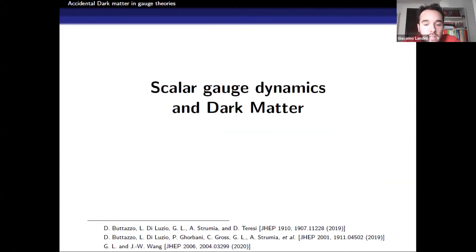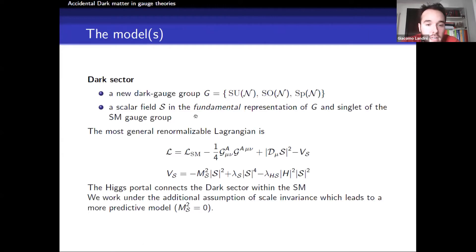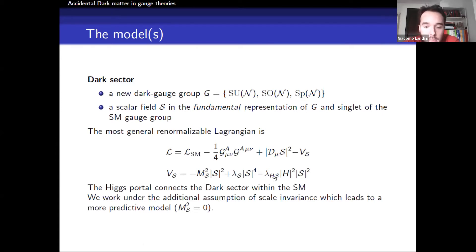We can now apply this to scalar gauge theories. We consider a new dark gauge group G — one among three — with a scalar field in the fundamental representation, similar to the standard model Higgs. We work at the renormalizable level and write down the most general Lagrangian. The dark sector is connected to the standard model through the interaction term between the new scalar and the standard model Higgs field — this is known as the Higgs portal. We also work under the additional assumption of scale invariance, meaning that all quadratic terms in the action are zero, so all relevant scales of the model, including the weak scale, can be generated dynamically, making the model much more predictive.